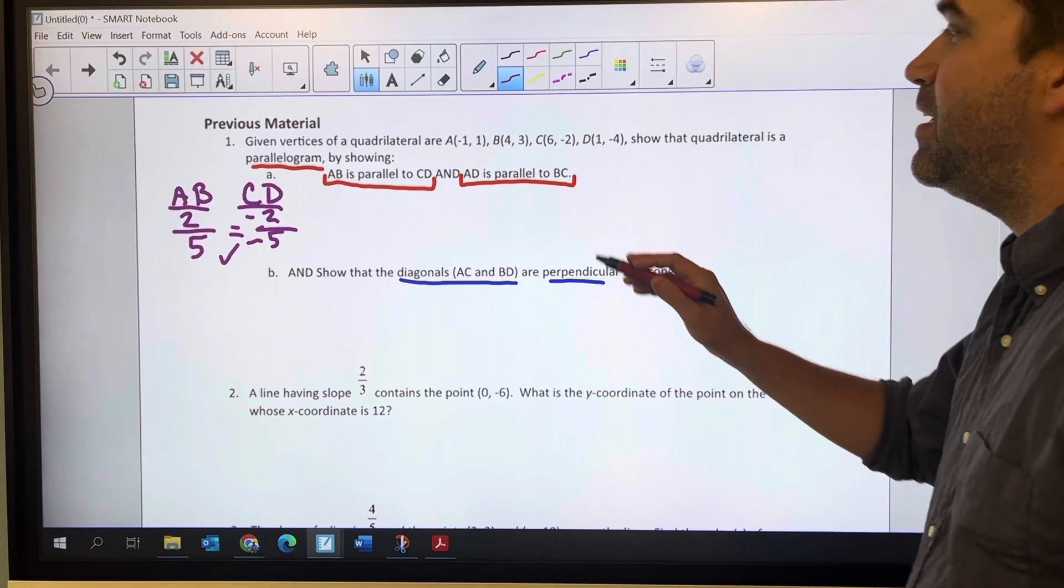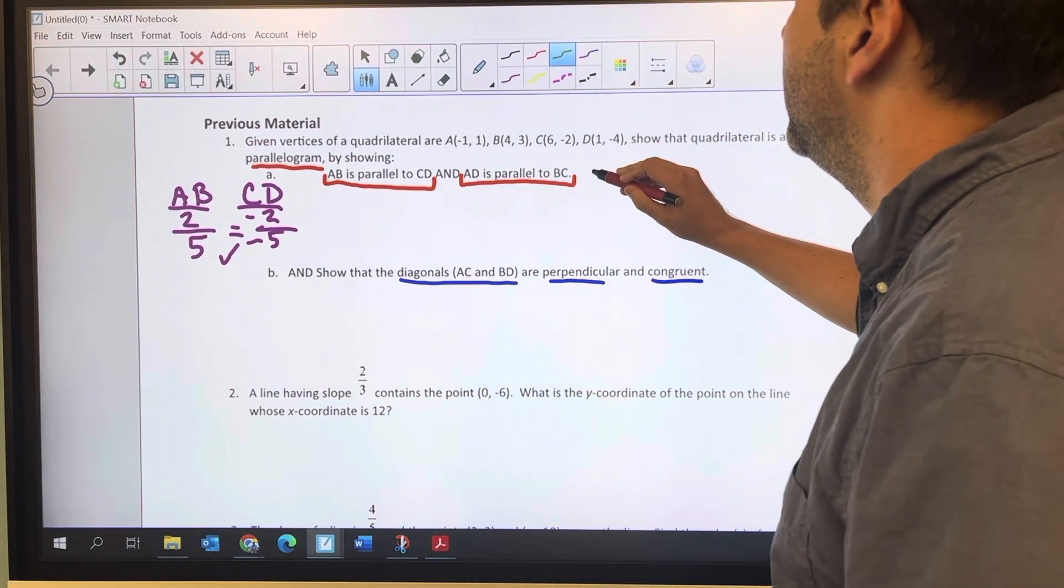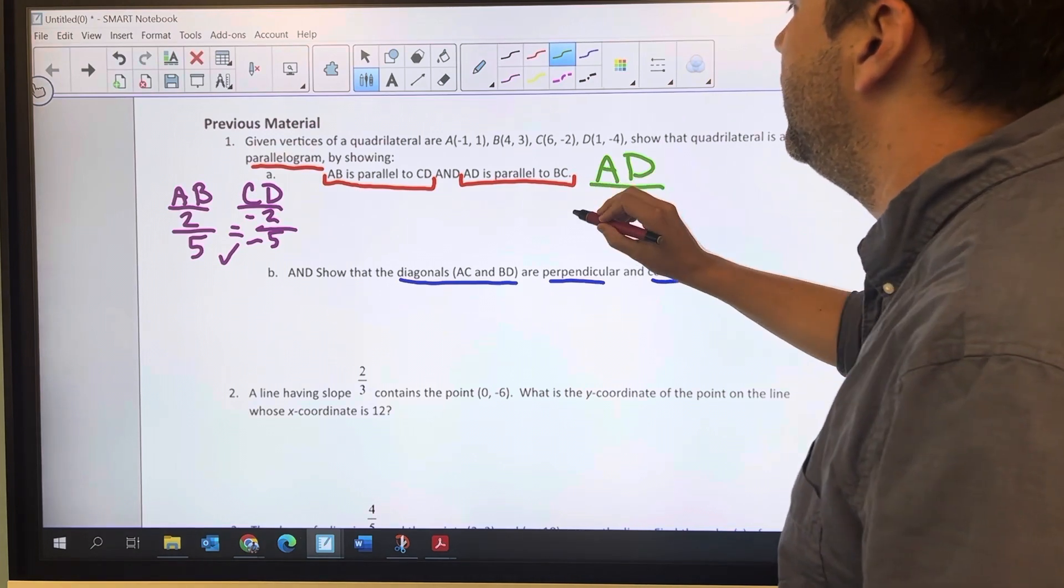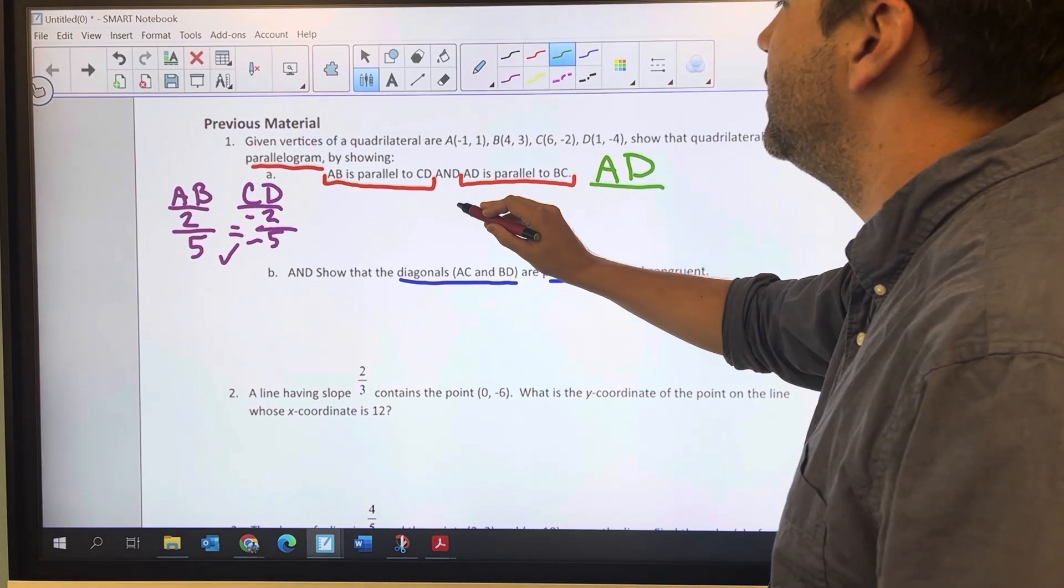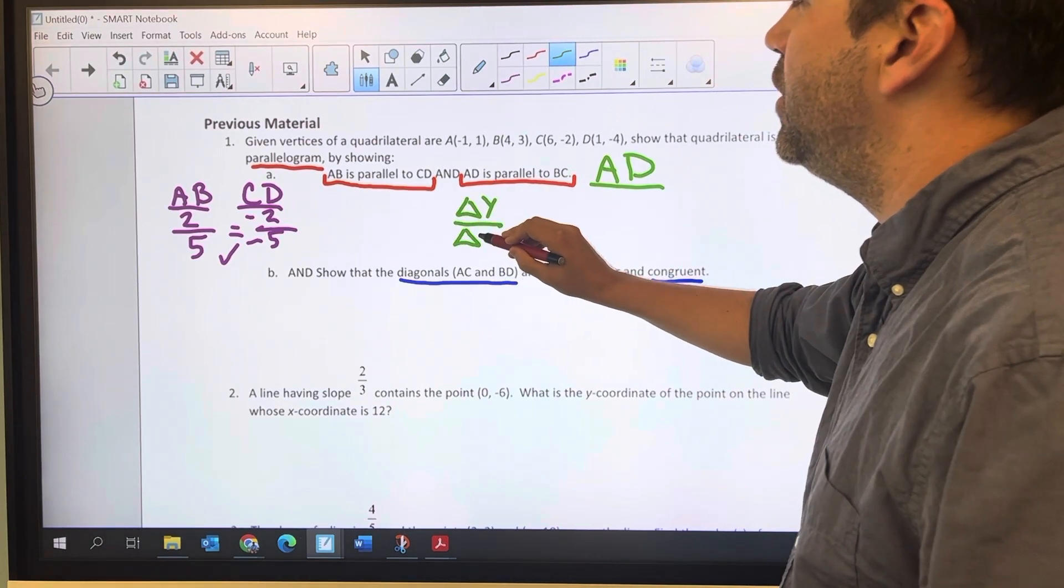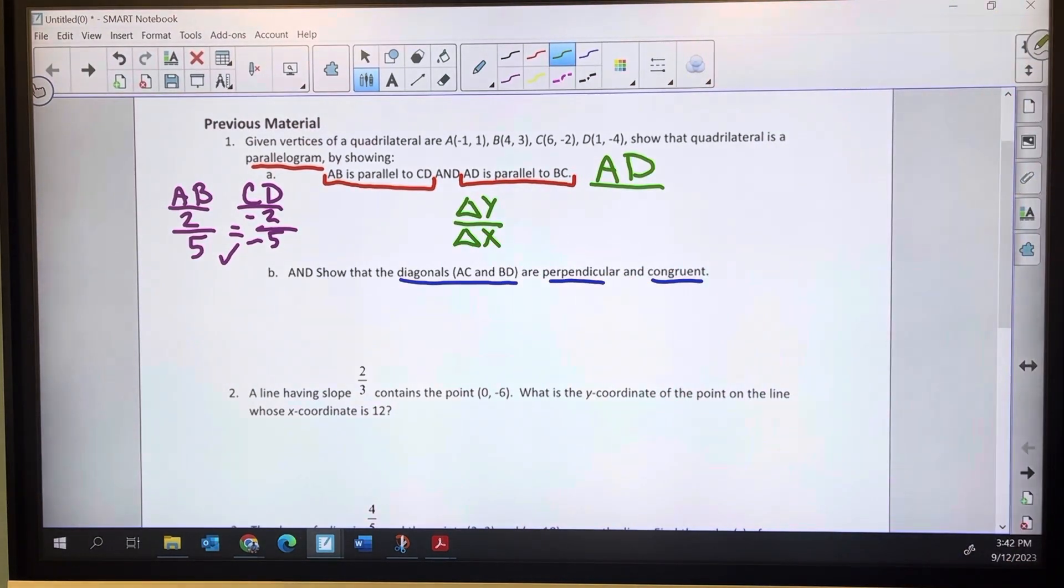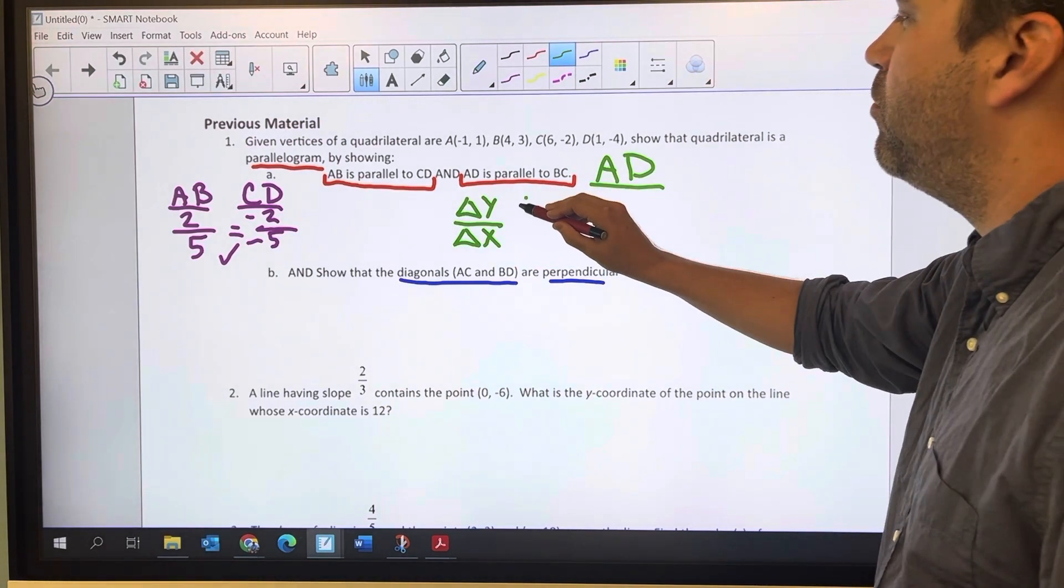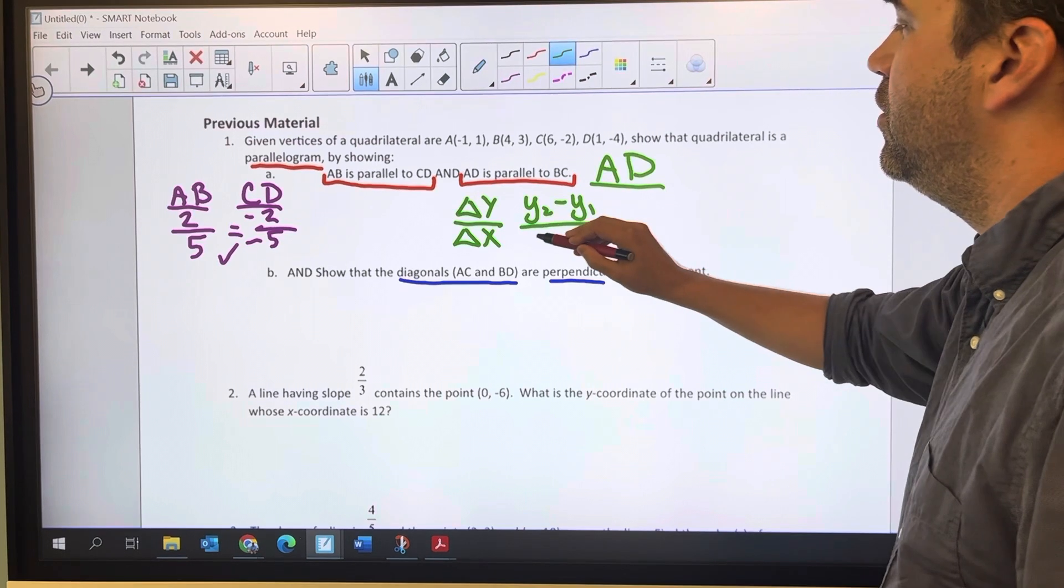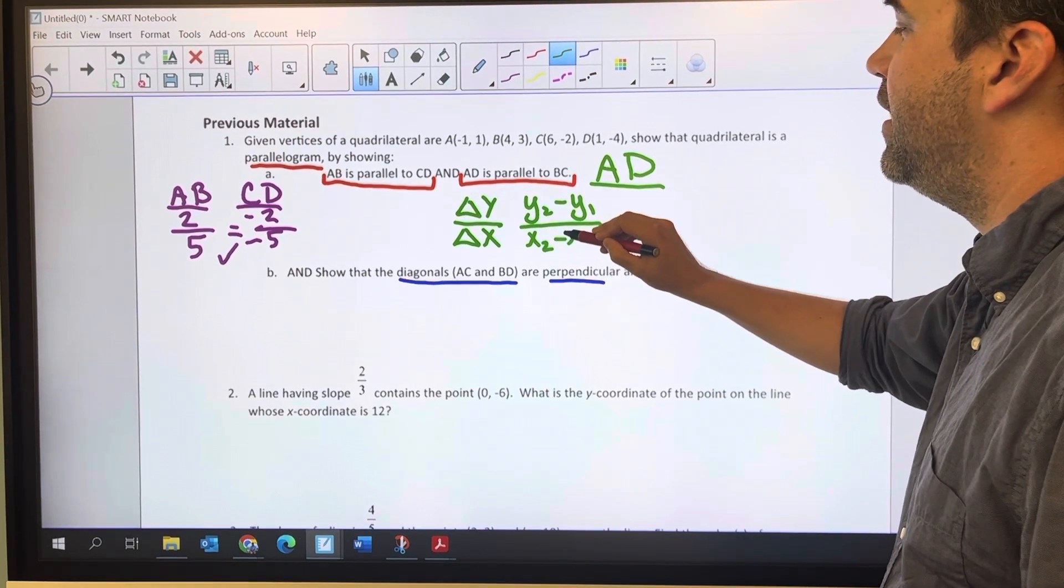Now I'm going to do the same thing for AD and BC. So AD, and in case you've forgotten how to find slope, let's go through the process. We've got change in Y over change in X or delta Y over delta X. I'm going to subtract my Y2 minus Y1 over X2 minus X1.